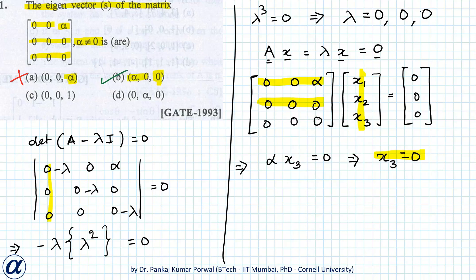In C, x₃ equals one, which is not zero, so that cannot be our answer. In D, x₃ is zero and x₁ and x₂ can be any real values, so D is also a correct answer.